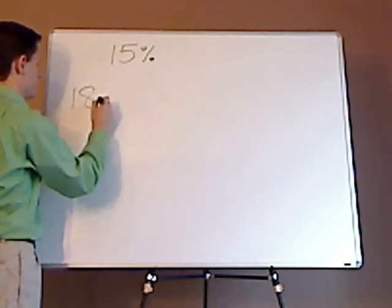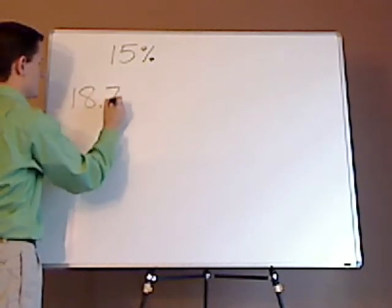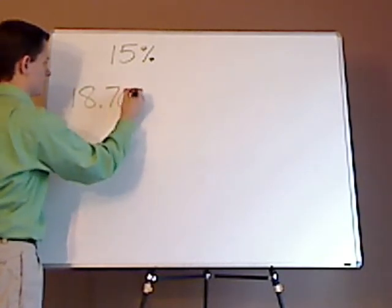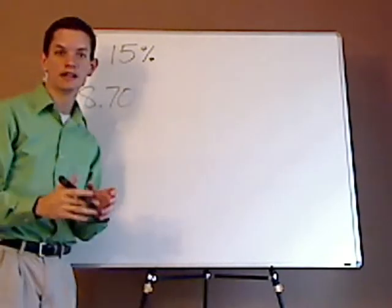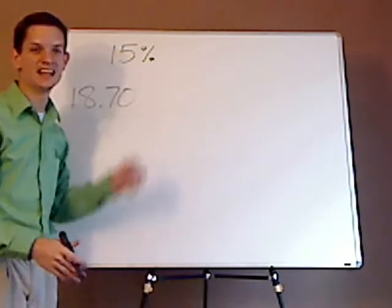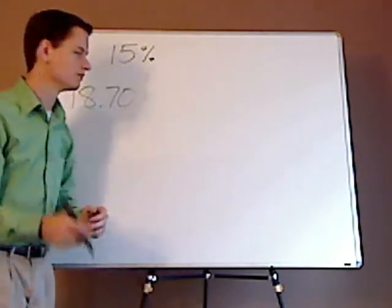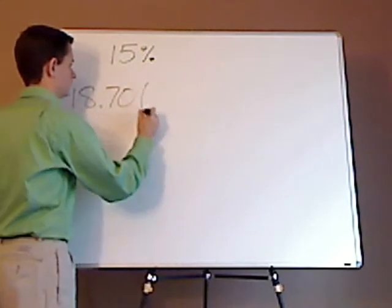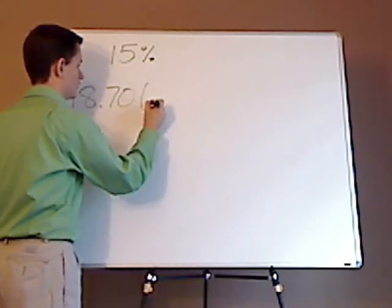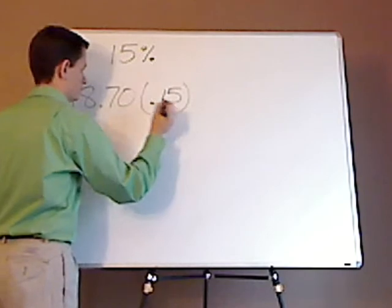Let's say that you have $18.70 and to calculate the tip, you would take 15 and just simply multiply it by 15 and convert 15 to a decimal.